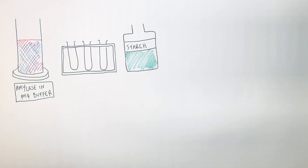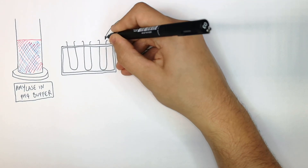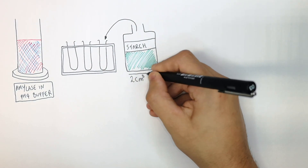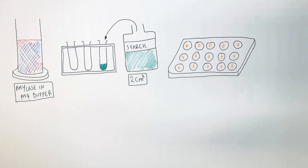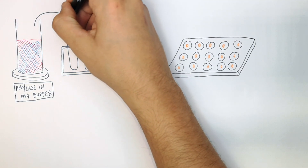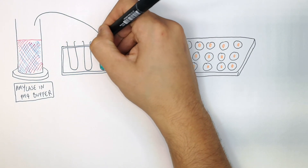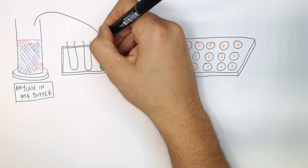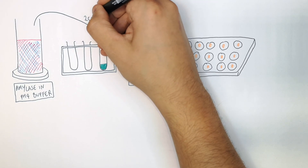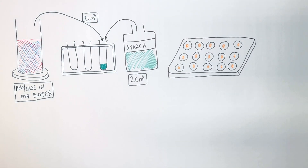Now that you have your amylase in the pH buffer solution, transfer two centimeters cubed of starch into a test tube. Then transfer two centimeters cubed of the amylase in the pH4 buffer solution into the starch.